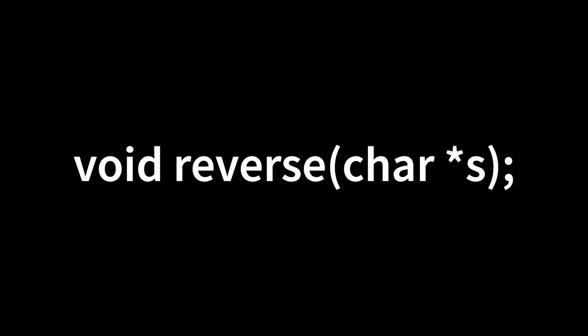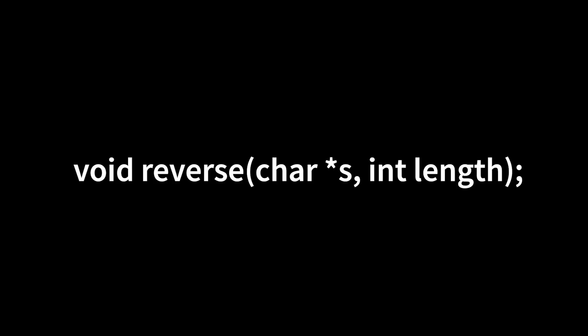So writing it this way implies that I trust whoever calls this function to have null terminated the string and to have allocated enough memory for that string. I could also pass in a length explicitly. Now I can use the length instead of looking for a null character, so that can be useful in some cases.